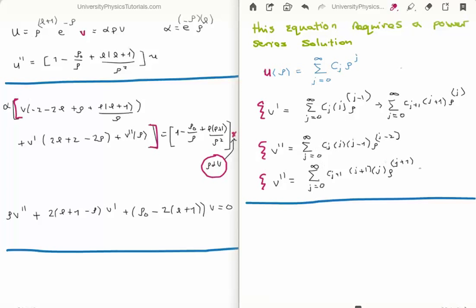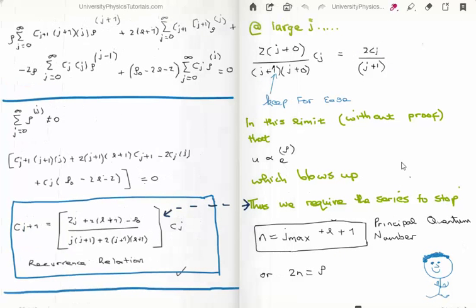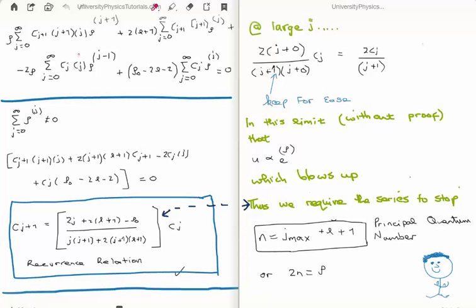Putting it all together gives a somewhat complicated equation, but it is really just algebra. Factoring out the infinite sum of rho^j — which can't be zero, otherwise we get the trivial solution — the sum of the coefficients must be zero. This gives us our recurrence relation: c_{j+1} in terms of c_j. Looking at the recurrence relation at large j, we get approximately c_{j+1} ≈ 2·cⱼ/(j+1).